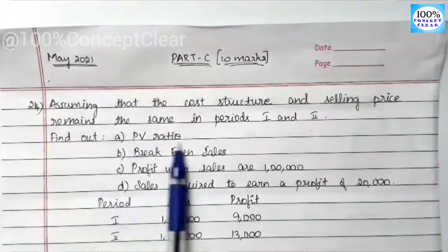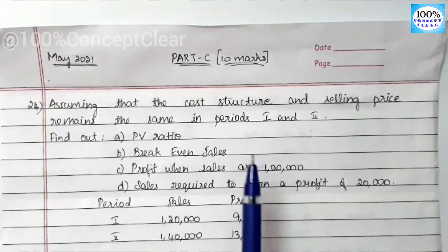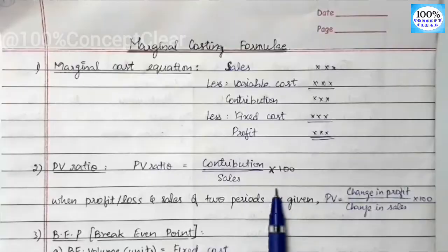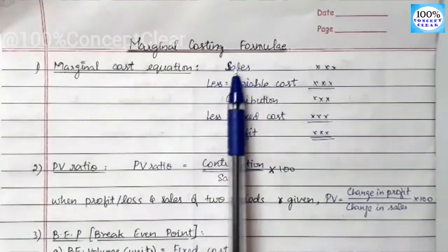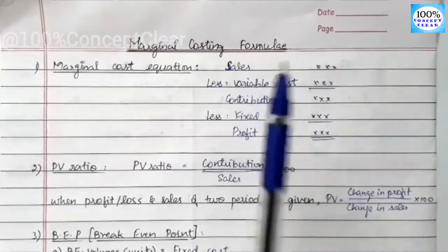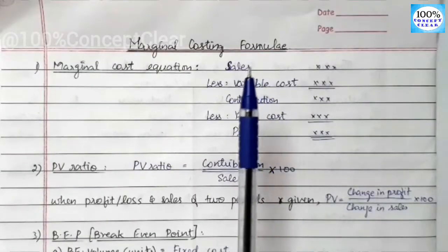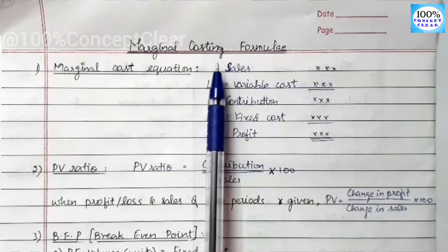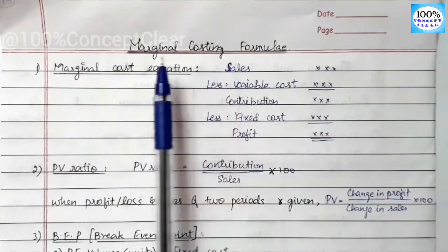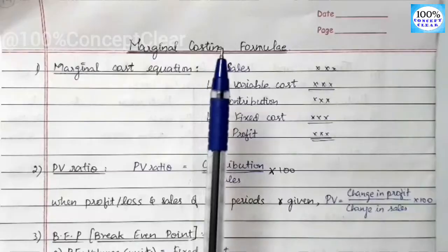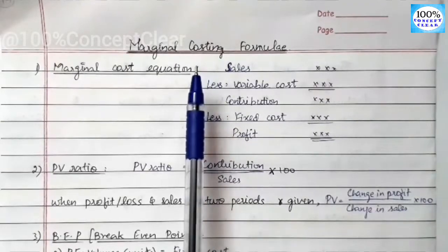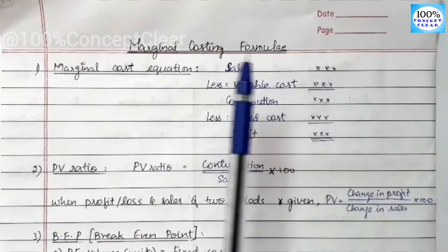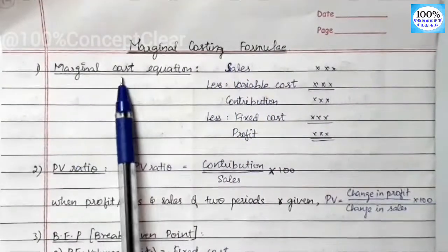Let's look at the Marginal Costing formula. What is Marginal Costing? It is a technique where we include only variable costs in the cost of a product. Any fixed cost is excluded from the cost — that is the concept of Marginal Costing.